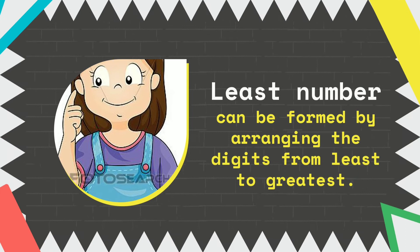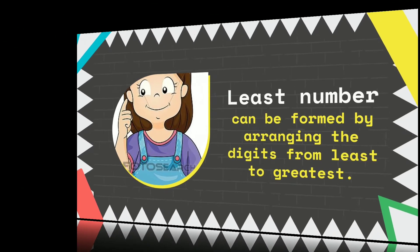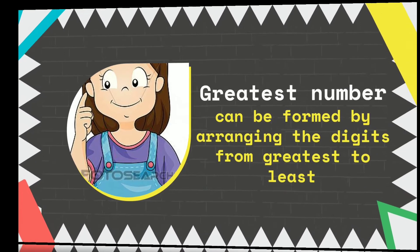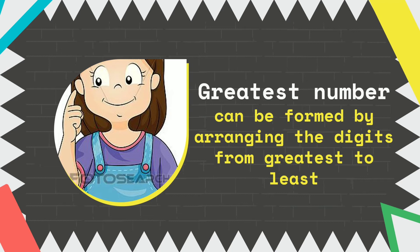Children, the least number can be formed by arranging the digits from least to greatest, while the greatest number can be formed by arranging the digits from greatest to least.